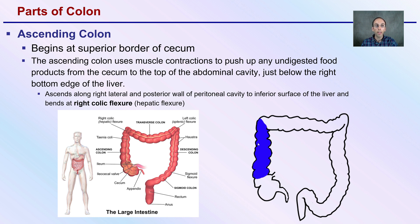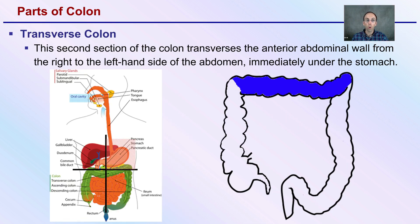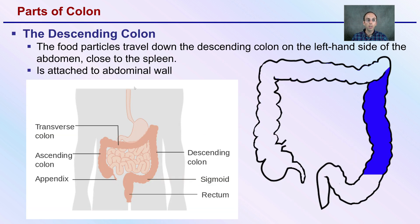After the ascending colon, we come to the transverse colon — the second section — which runs anterior to the abdominal wall from the right to the left side of the abdomen, immediately under the stomach. Then we have the descending colon, where food particles travel down on the left side of the abdomen, close to the spleen. Keep in mind the way it's oriented: what appears on the right side of the image is actually your left side. It is attached to the abdominal wall.